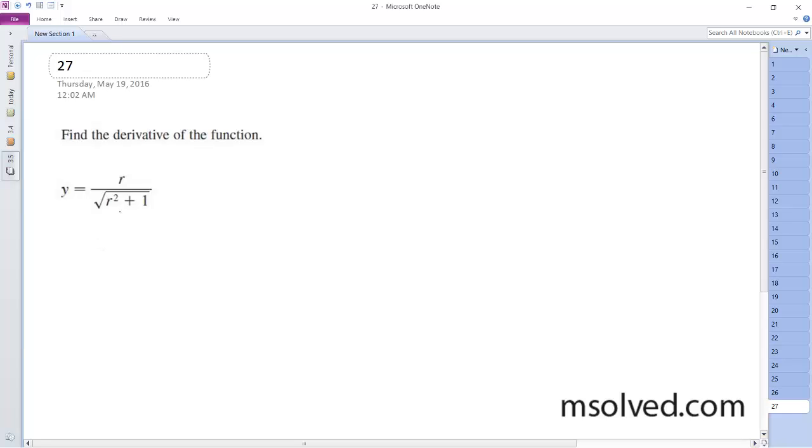So we're going to find the derivative of this. I'm going to rewrite this as r times quantity r squared plus 1 raised to the negative 1 half.